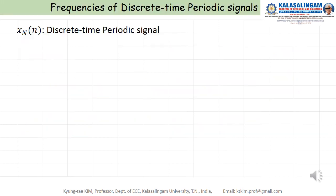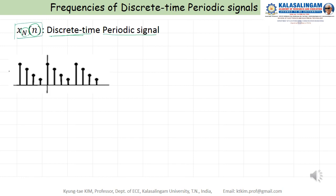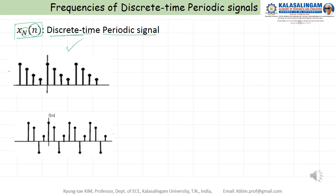Discrete — this means discrete, this means periodic: discrete time periodic. We can write x of n like this. For example, this is one example of a discrete time signal, and this one also. Now you can see here, this pattern is repeated here, and this also has been repeated. Therefore, we call this periodic.